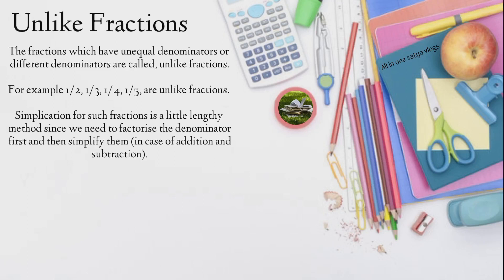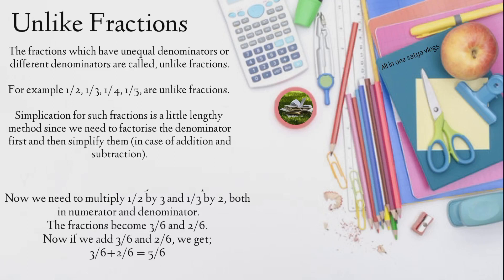Simplification for such fractions is a little lengthy method since we need to factorize the denominator first and then simplify them, in case of addition and subtraction. Suppose we have to add 1/2 and 1/3. Then, first, we will find the LCM of two and three, which is equal to six.